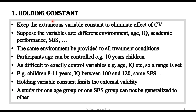Let us understand the first way of controlling extraneous or confounding variables, which is holding constant. The idea is that whatever extraneous variables we have, or variables that could become confounding variables, we need to keep them constant and under control. We keep the extraneous variable constant in order to eliminate the effect of confounding variables, because these variables can affect our study.